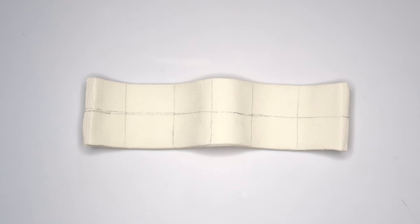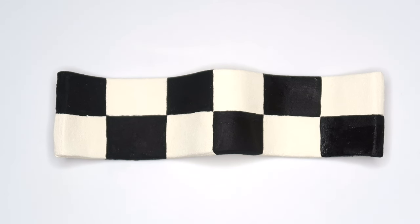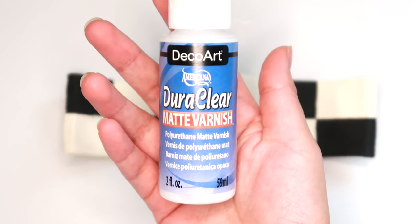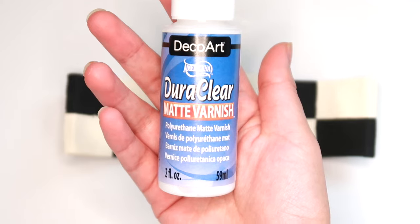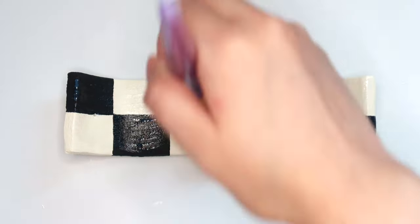I also wanted to give this a checkered look, so I just sketched in the best I could checkered print and then I painted it in black. Lastly, I'm going to seal this with Deco Arts Matte Varnish and then just add in some incense sticks. This would make such a great holiday present.